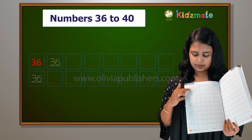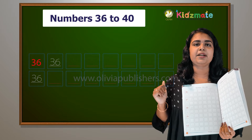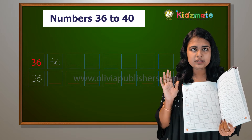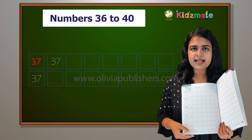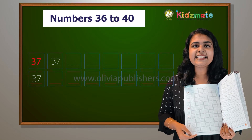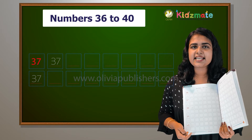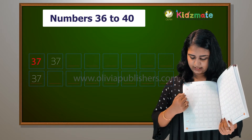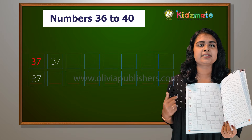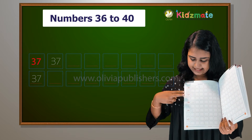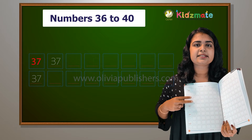Here we go. Let's see if you have two lines, you can fill the 36 lines. Okay? Is it okay? Is it 36? Then 37 — so you have to fill all these boxes with the number 37.